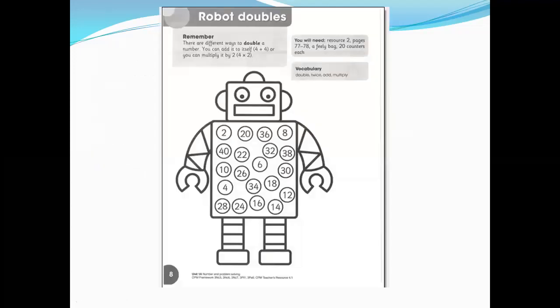Page number 8 from your Skill Builder book. You can see this page. How to solve it? There are different ways to double a number. You can add it to itself. It means 4 plus 4, make it double. Or you can multiply by 2. So, you can also multiply by 2 like this, 4 multiply 2.